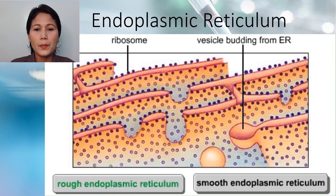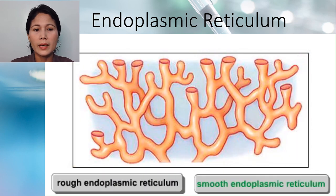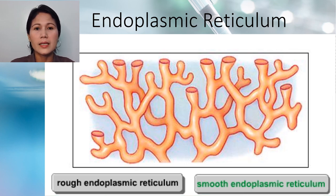Rough endoplasmic reticulum has many ribosomes on it, and is responsible for transporting proteins made in ribosomes. Smooth endoplasmic reticulum has no ribosomes and curves through the cytoplasm like connecting pipes, which serves in lipid synthesis.